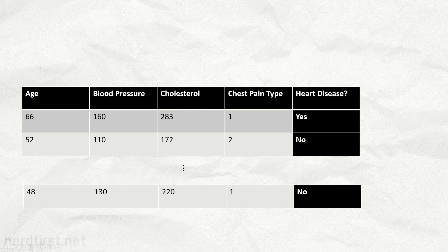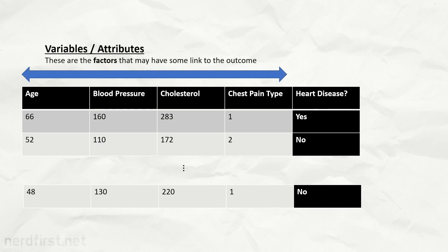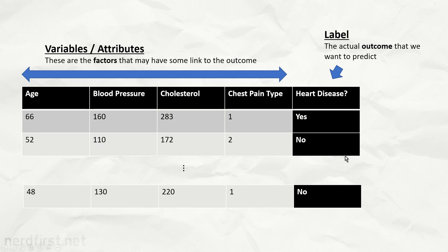Typically in machine learning, how we structure our data is we have a set of columns or variables, then we have a column that is an output, also known as a label. To give you a concrete example, let's say we're talking about heart disease — we can measure things like a person's resting heart rate, their cholesterol level, their age, whether they have any chest pain, and so on. Our label would be positive or negative, that is whether they actually have heart disease.